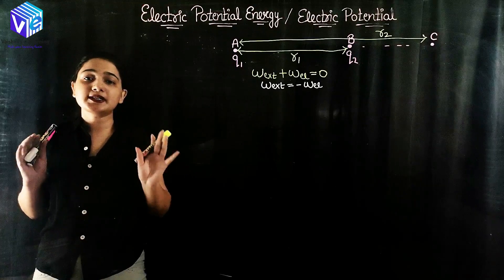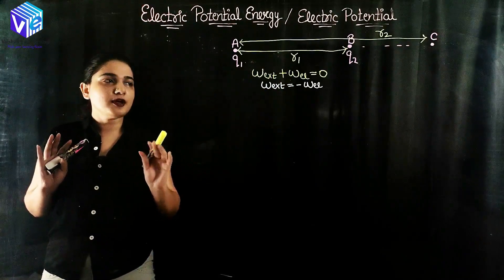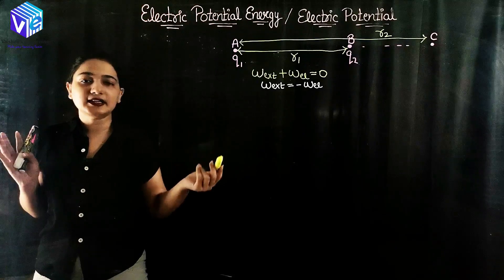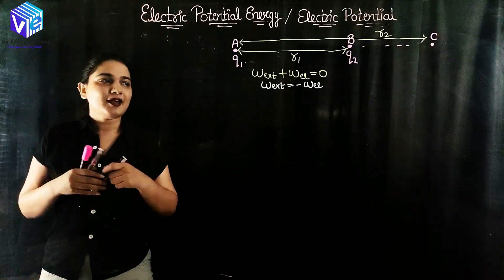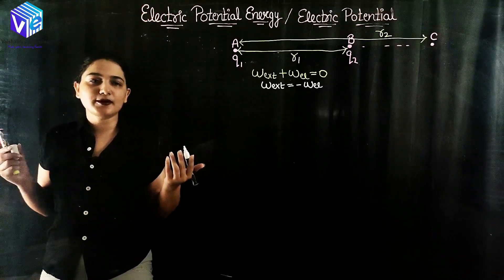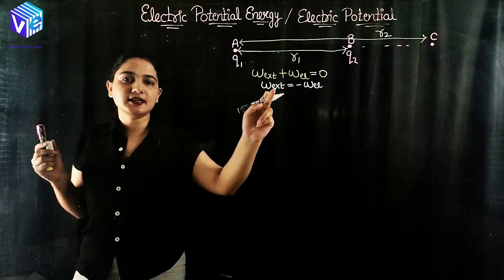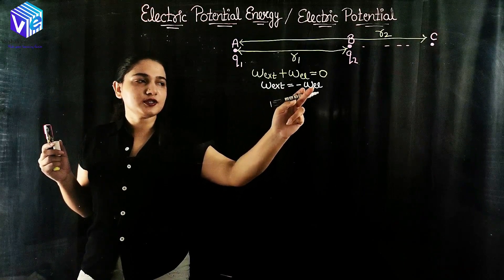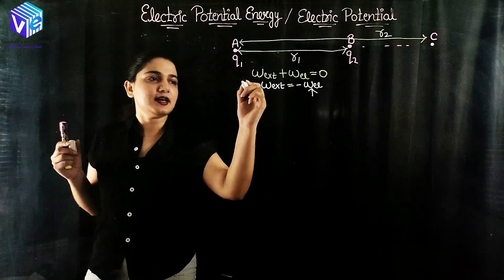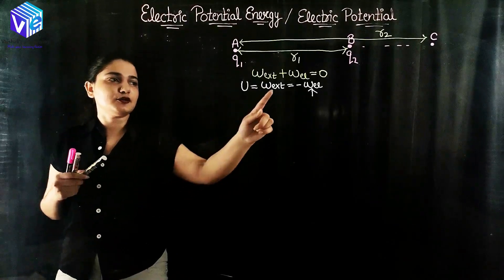Here I am considering that the kinetic energy is zero — only then this equation holds true. The external work done is equal to the negative of electric potential energy. We can calculate the electric force with the help of Coulomb's law, and with the force we can calculate the work done. With this work done we can calculate the external work done. Taking the negative of W_electric gives us W_external, which equals the electric potential energy, denoted U.